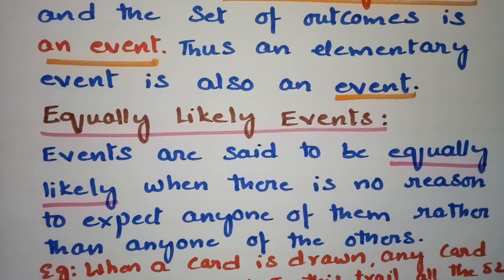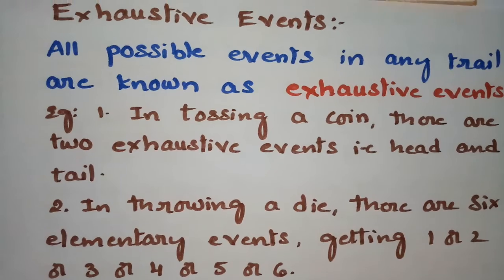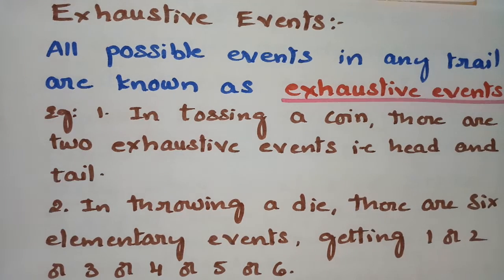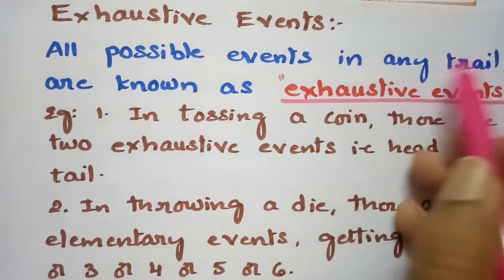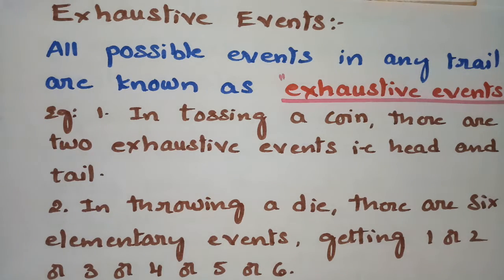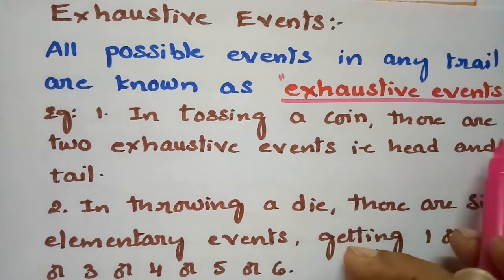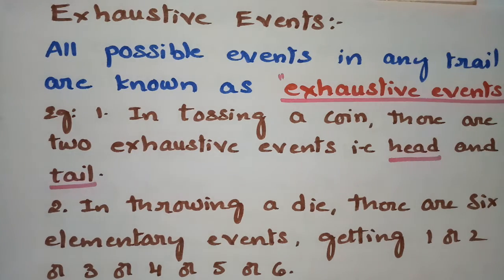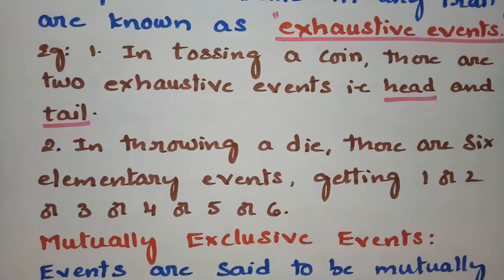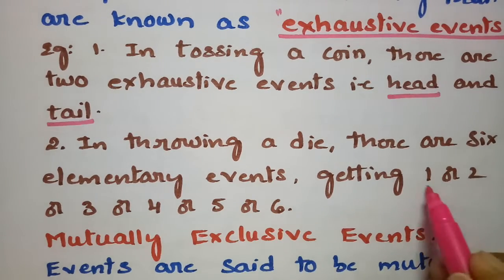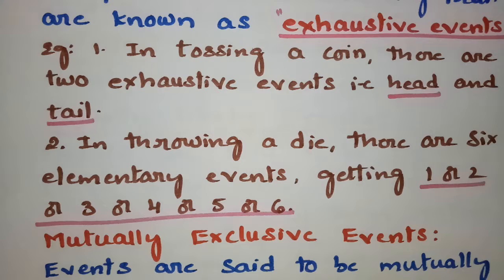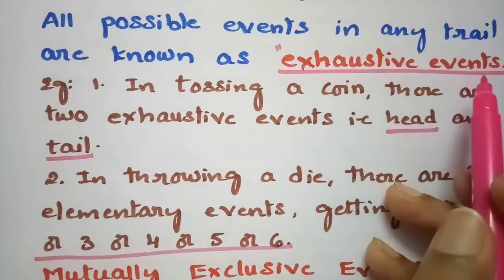The next definition is exhaustive events. All possible events in any trial are known as exhaustive events. For example, in tossing a coin there are two exhaustive events: head and tail. In throwing a die there are six elementary events — one, two, three, four, five, or six. All the possible events in any trial are known as exhaustive events.